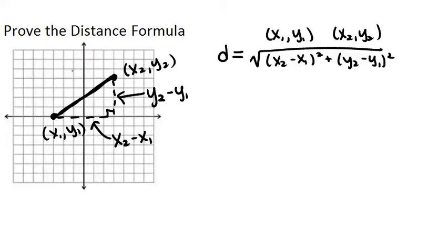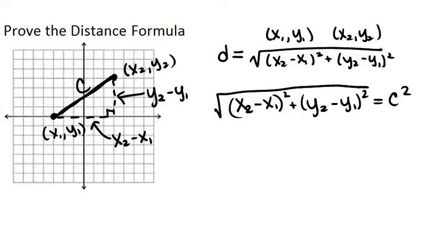So if we call this third side c for the hypotenuse, we know that x2 minus x1 squared plus y2 minus y1 squared, so those are our two legs squared, equals c squared. So if we want to figure out c, we just square root both sides, and we get the square root of all of that equals c, which is our distance between the two points.